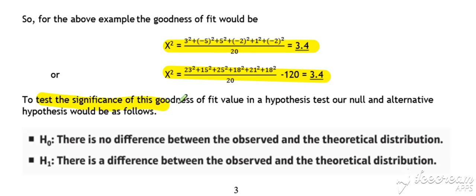Then our hypotheses would be: H₀ - there is no difference between the observed and the theoretical, against the alternative that there is a significant difference between the observed and the theoretical. We'll look more at the hypothesis testing aspect of goodness of fit further on in this pack.